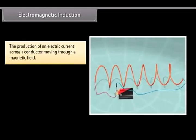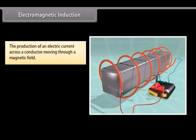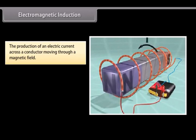Electromagnetic Induction. The production of an electric current across a conductor moving through a magnetic field is called electromagnetic induction.